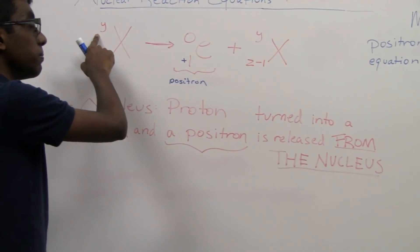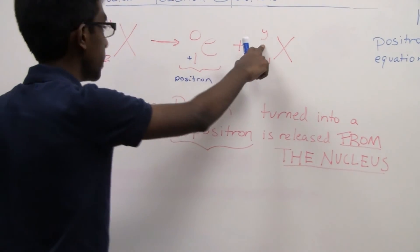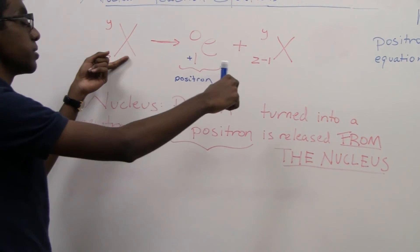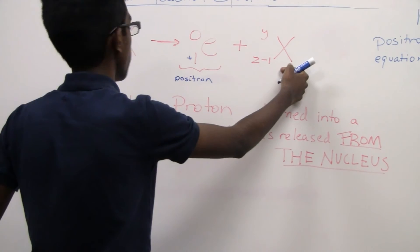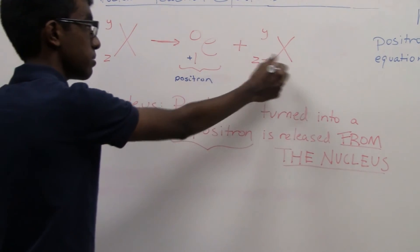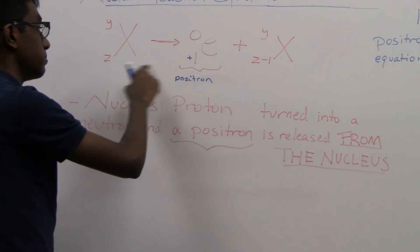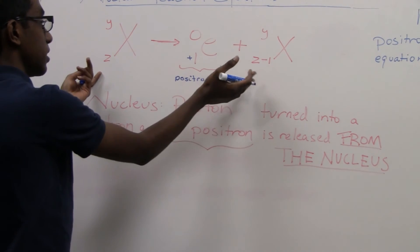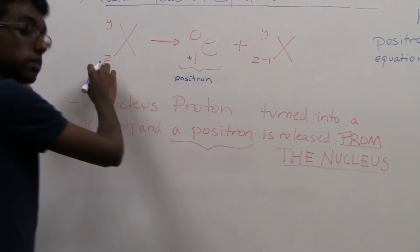Now, our mass numbers are going to remain the same from our original atom to our new atom. But our atomic number is going to be decreased by minus one in order to balance on both sides. That's z minus one plus one equals z.